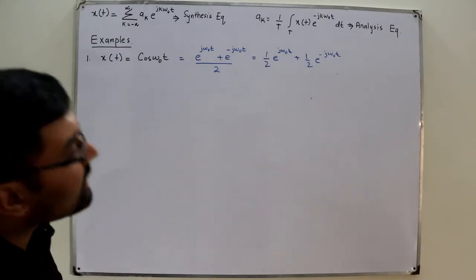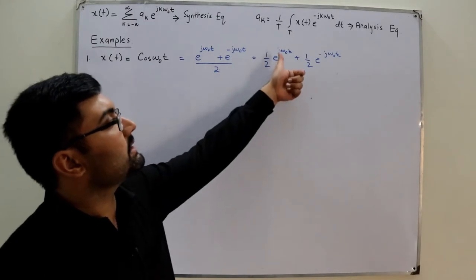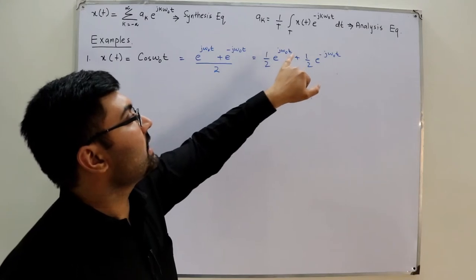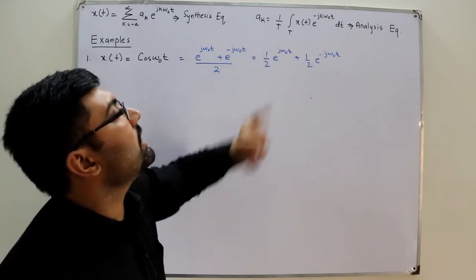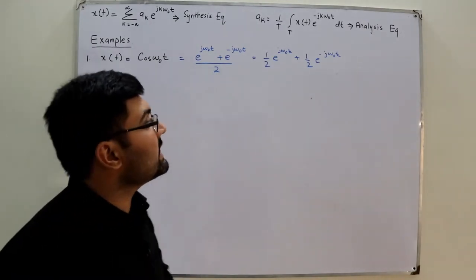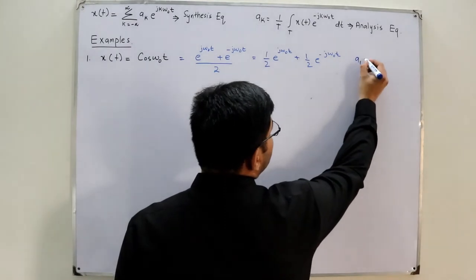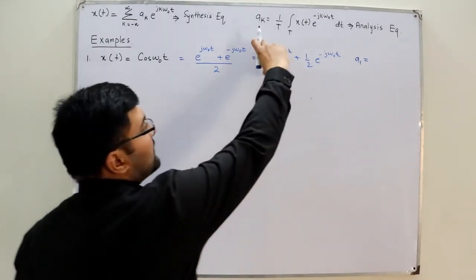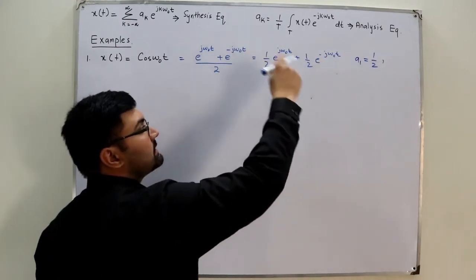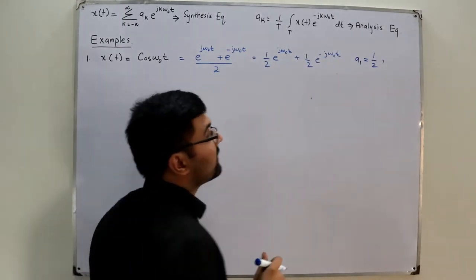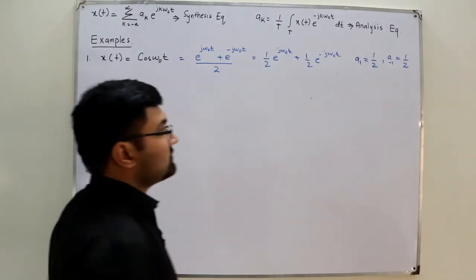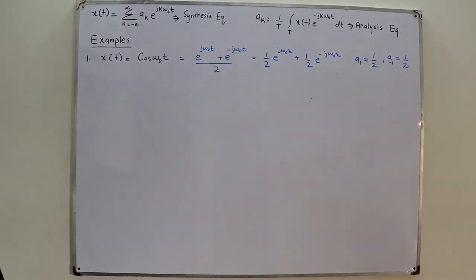Now, what are the Fourier coefficients? If you compare e^(jω₀t) with the synthesis equation, jω₀t means this represents k = 1. So for k = 1, the coefficient a₁ is 1/2. Similarly, comparing the other term with the synthesis equation, you have a₋₁, and that is also equal to 1/2.